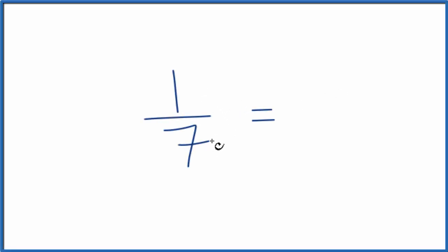Let's express the fraction 1/7 as a decimal. So what we want to know is 1 over 7, what is that in decimal form?